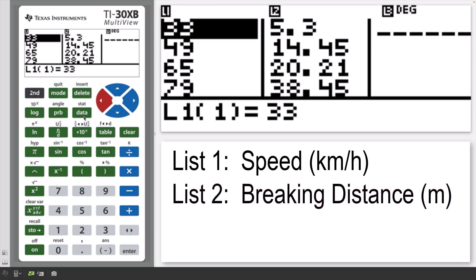It has been suggested that a linear relationship exists between the speed and the braking distance. Find a linear rule of the form y equals a plus bx between speed as the x variable and braking distance as the y variable.